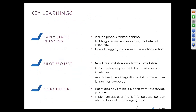We made some key learnings from this case study. From the early planning stage, it was important to include all process-related partners, build organizational understanding and internal knowledge, and consider aggregation in the serialization solution. It is also important to make a pilot project, since you need to install, qualify, and validate the technology. Clearly define requirements from customers and interfaces, and allow extra time because integration of first machines takes longer than expected. In conclusion, it is essential to have reliable support from your service provider, and you should implement a solution that can go live as soon as it is ready, but can also be tailored to changing customer or industry needs.